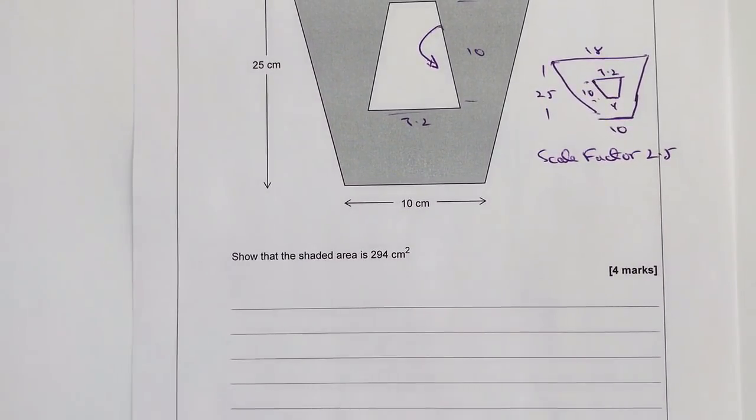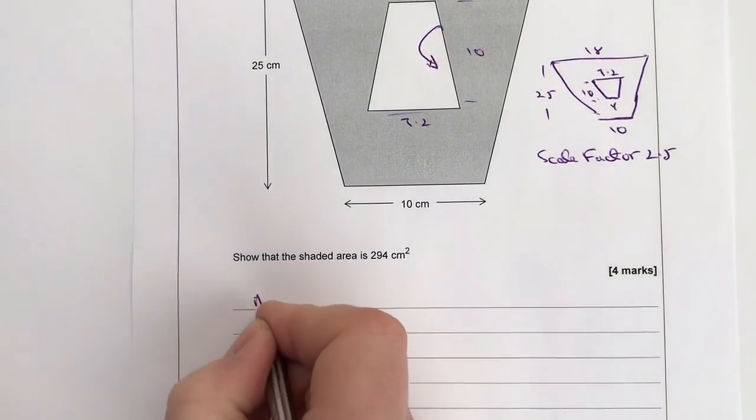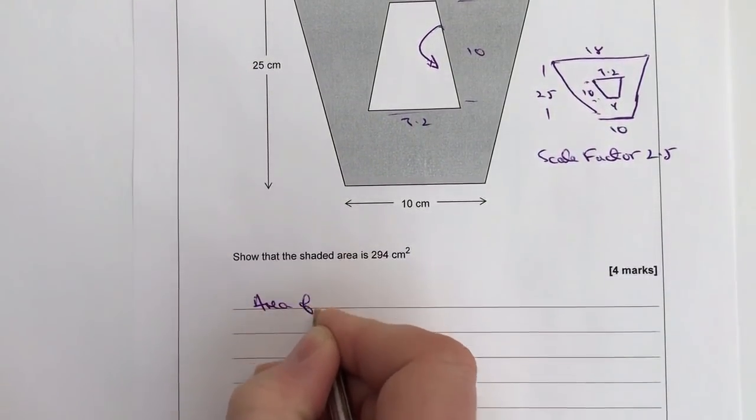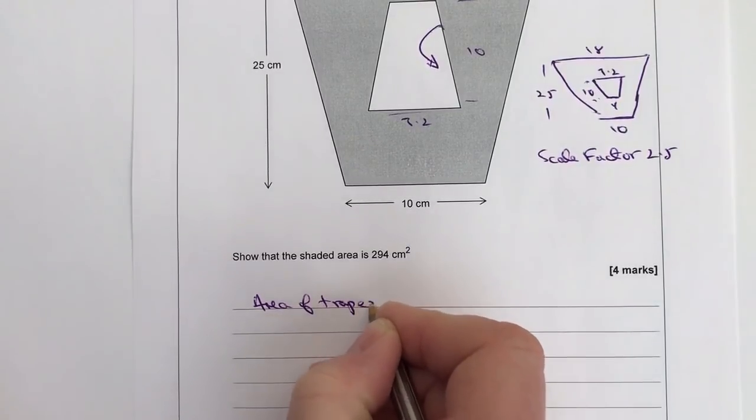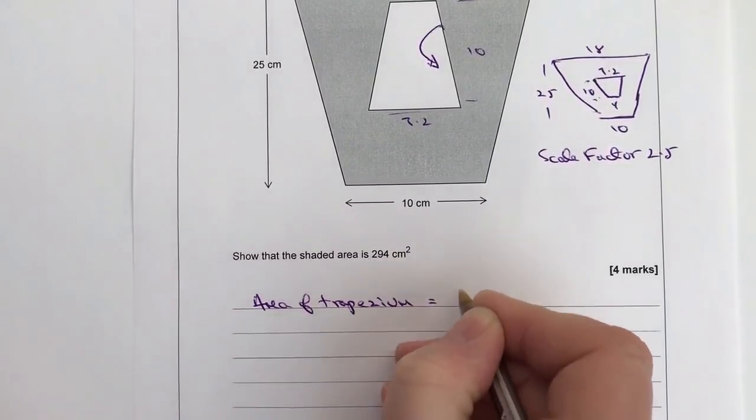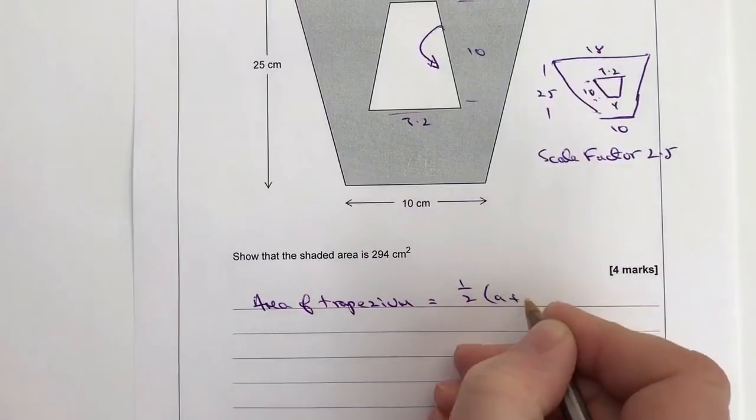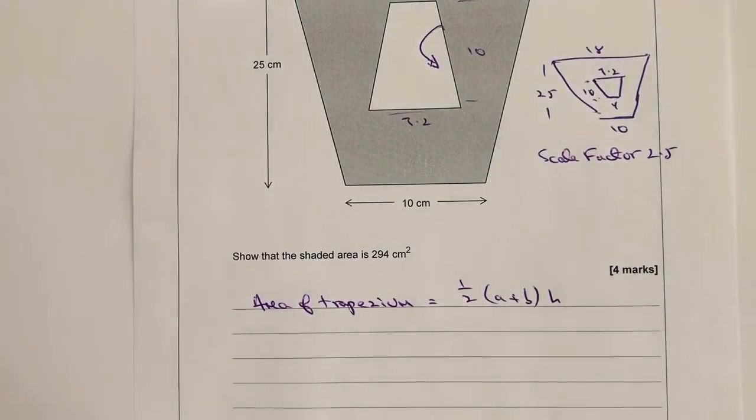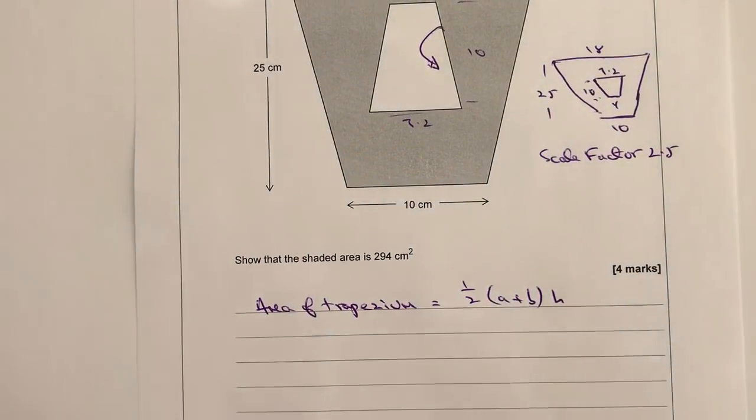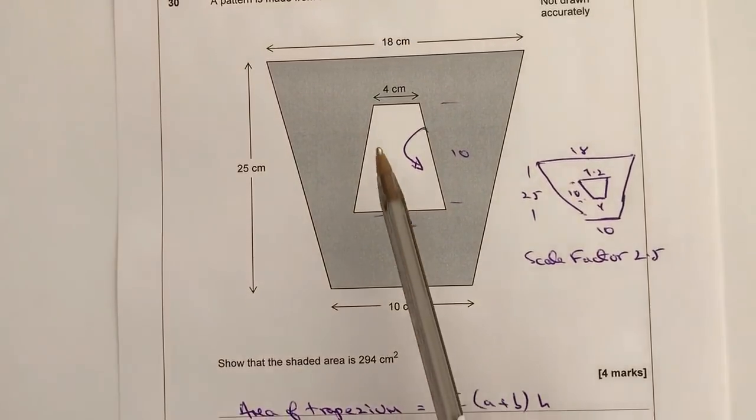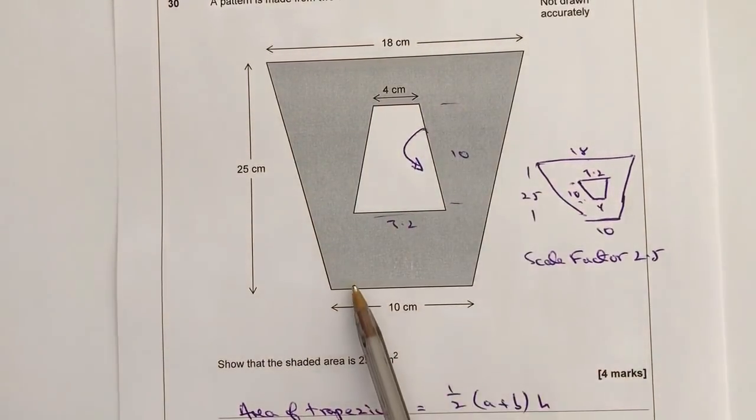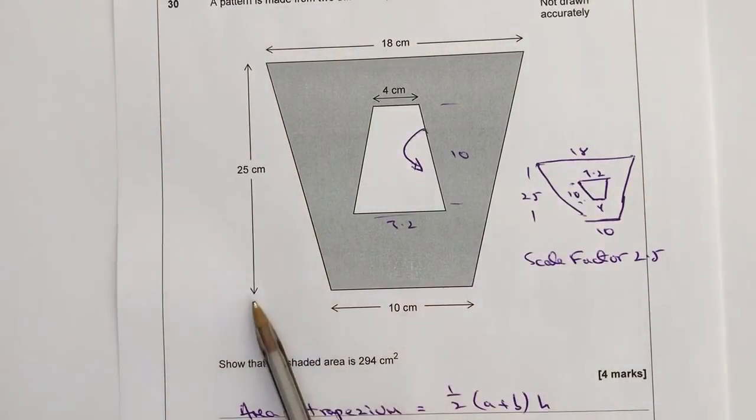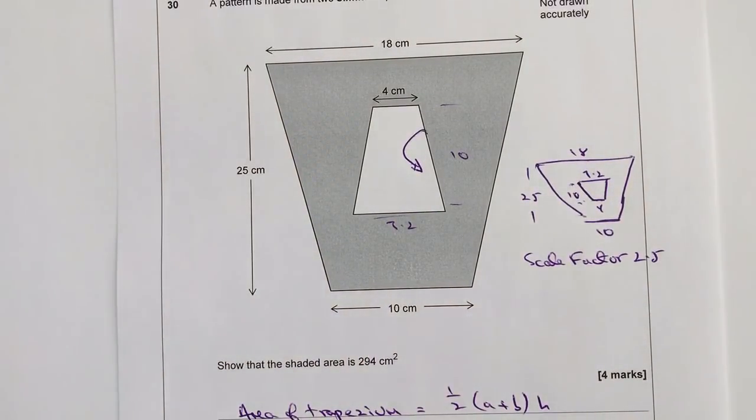So the formula for working out the area of a trapezium—I'm not entirely sure whether these are going to show up on exam papers, I think they are—but you need to be aware. So the area of a trapezium is equal to a half (a plus b) times h. So a is going to be, if I'm looking at the big one here, is this 18, b is 10, and h is going to be 25, the vertical height.